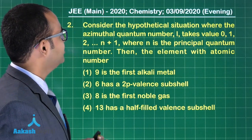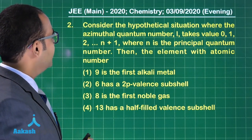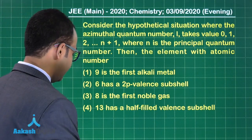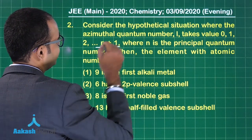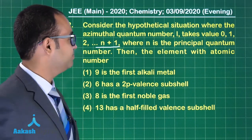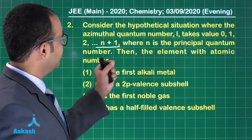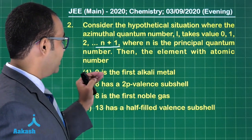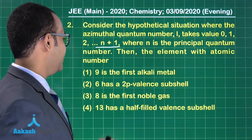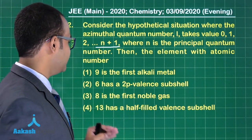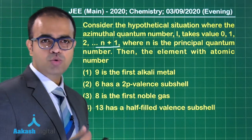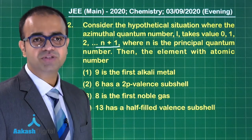Question 2: Consider the hypothetical situation where the azimuthal quantum number L takes values 0, 1, 2, ..., N+1 — note it is N+1, not N−1 as in the usual case — where N is the principal quantum number. Then determine which of these is correct: atomic number 9 is the first alkali metal; 6 has a 2p valence subshell; 8 is the first noble gas; 13 has a half-filled valence subshell.